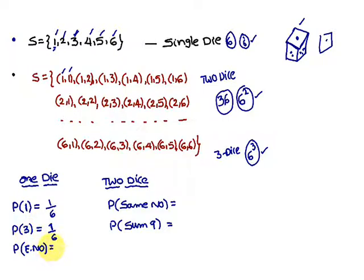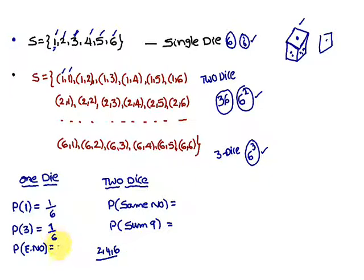The second problem is probability of getting an even number. How many even numbers are there? Two is an even number, four is an even number, six is an even number in the sample space. So how many are favorable for this event? Three. Therefore, three out of total six — probability is three by six.